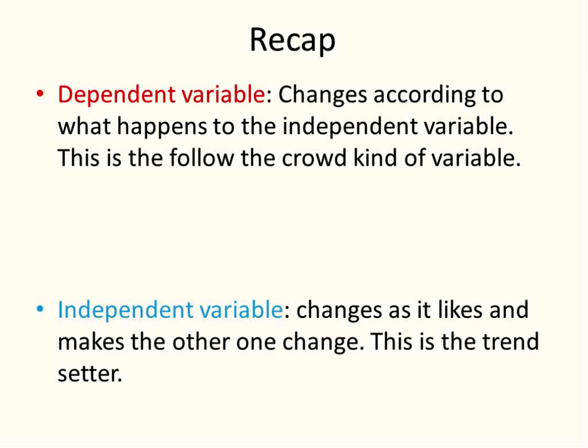So quick recap. Your dependent variable changes according to what happens to the independent variable. This is the follower in your group. This is the output in your group. Your independent variable changes as it likes. It can change very randomly. It can change however it wants. This is the trendsetter. When it changes, it forces the other one to follow suit. Independent variable is your input. Dependent variable is your output. Hope that lesson helped to clarify dependent versus independent variables using those examples. And have a wonderful day.